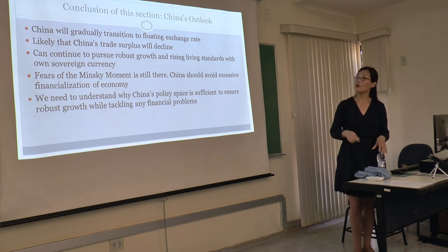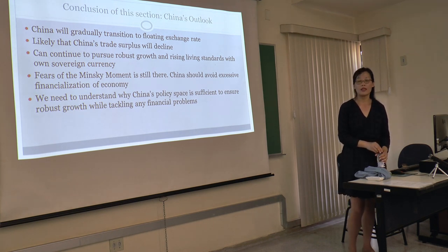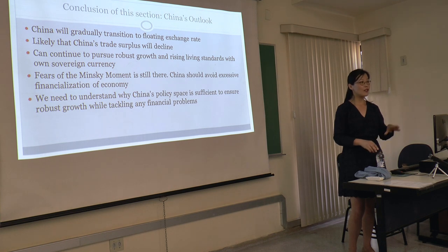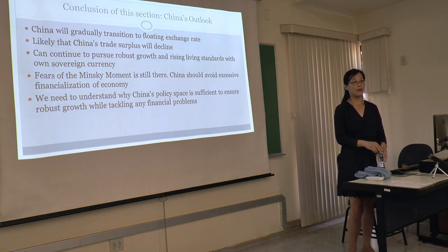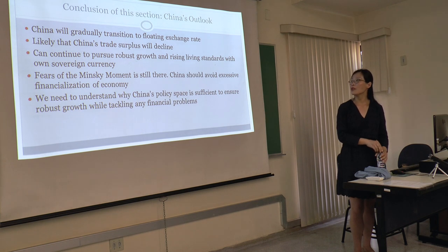Summarizing this session on China's economic outlook: China will gradually transition to a floating exchange rate. It's very likely that China's trade surplus will decline — it actually already is declining, though the government doesn't like that because economic growth is going down. China can continue to pursue a role of growth and rising living standards with its own sovereign currency — that's from the sovereign currency theory. Fears of a Minsky moment are still there; this year they have more fears because the stock market has been going really bad all year.